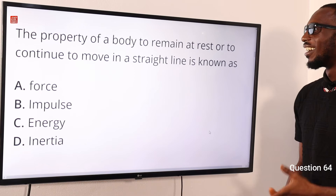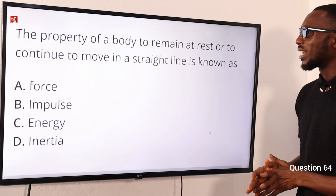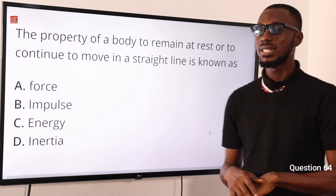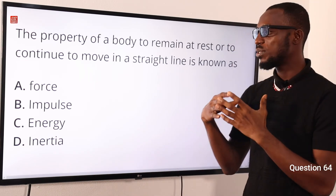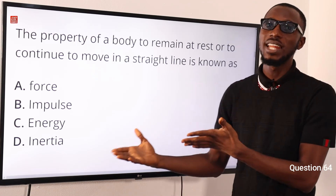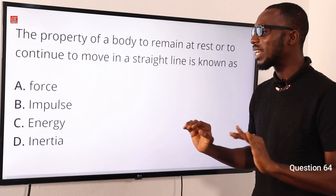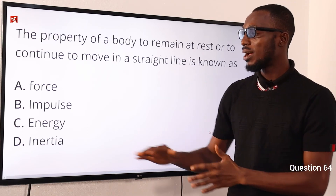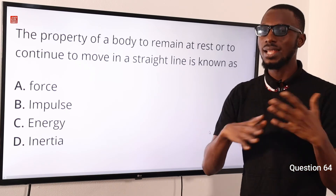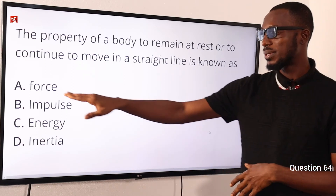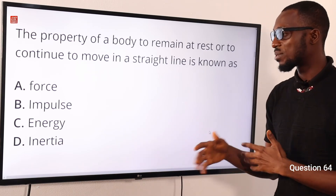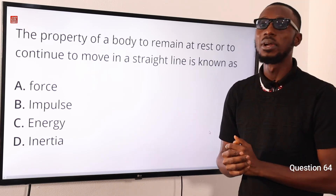Question 64: The property of a body to remain at rest or to continue to move in a straight line is known as what? This is known as inertia. When you define Newton's first law of motion, you get the idea of inertia. Impulse is the product of the average force acting on a particle and the time it takes to act. The correct option is option D, inertia.